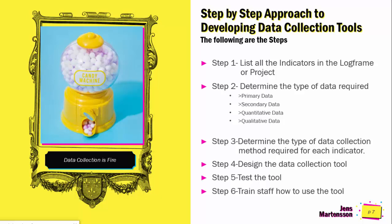Step two is to determine the type of data required. There are different types of data. Primary data is data that you collect yourself or as an institution — you have ownership of that data. Secondary data, on the other end, is data not collected directly by you, but where you use other people's work. You've also got quantitative data, which is numerical, and qualitative data, which is non-numerical — for example, open-ended questions that ask for people's own perceptions.